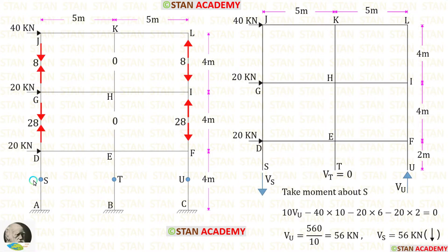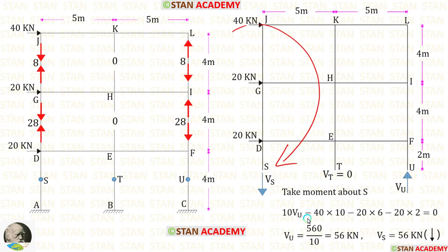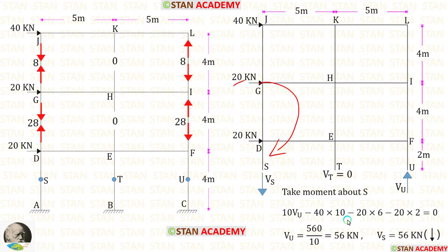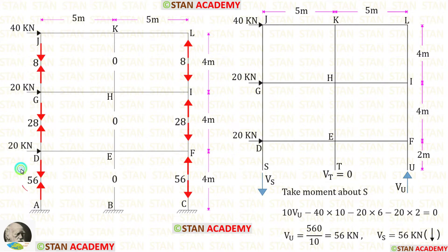Now let us split the frame into two parts from the center of the columns in the bottom story and take the upper part. Let us take moment about S. VU is acting in the anti-clockwise direction, so that will be positive and the distance is 10, giving 10·VU. The 40 kN is acting in the clockwise direction, so that will be negative and the distance is 10. The 20 kN is also acting in the clockwise direction, so that is negative and the distance is 6. This other 20 kN is also clockwise, so negative and the distance is 2. Finally, for VU we are getting 56 kN. We know that VU and VS will have the same value, but VS will be acting downwards. Let us apply the axial forces.